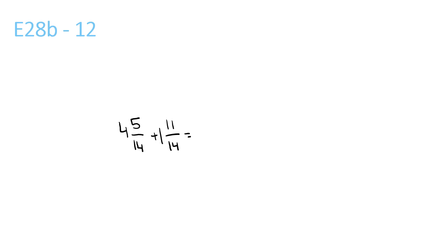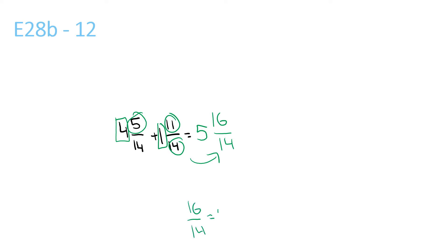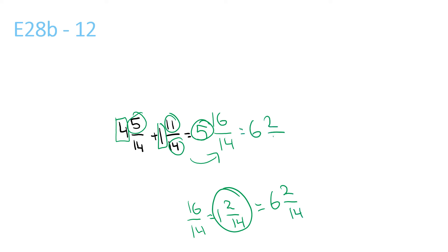For this one, we've got 4 plus 1, which is 5. Then 5 plus 11 is 16, over 14. Now 16 over 14 is the same as 1 and 2 over 14. We have this plus 5, which is equal to 6 and 2 over 14. Since we have 6 and 2 over 14, we can simplify the 2 and the 14, so it would be 6 and 1 over 7.